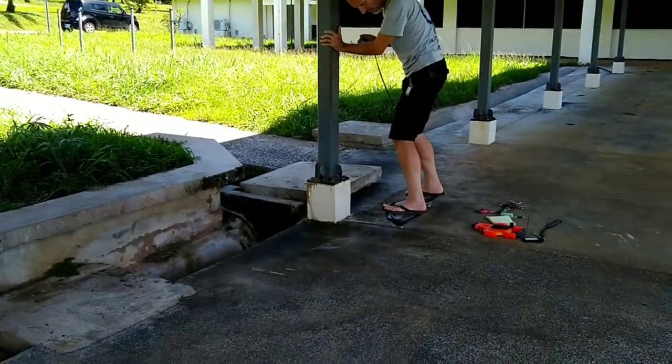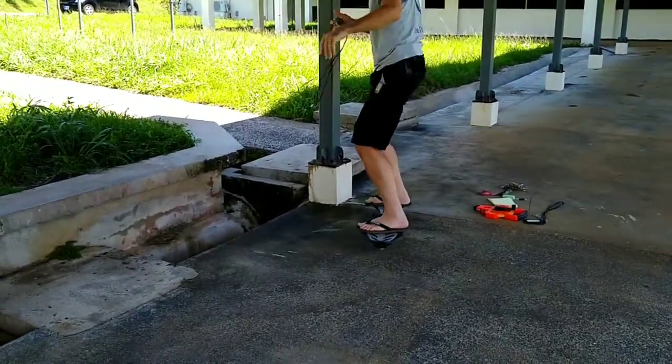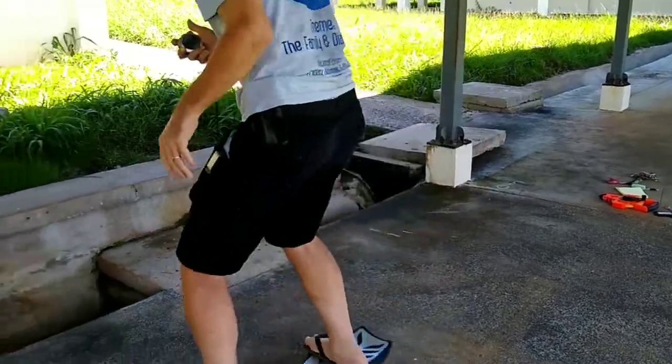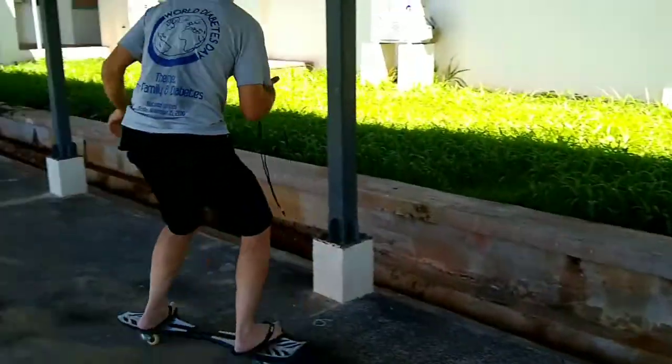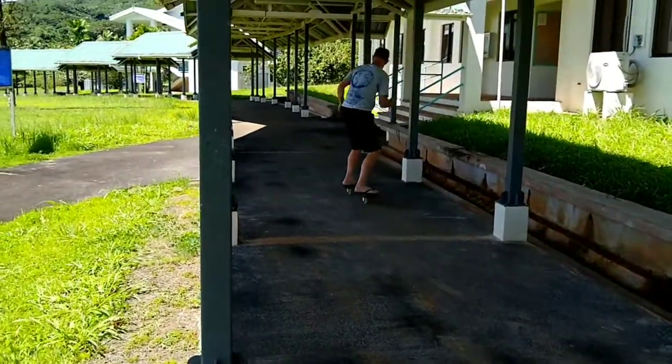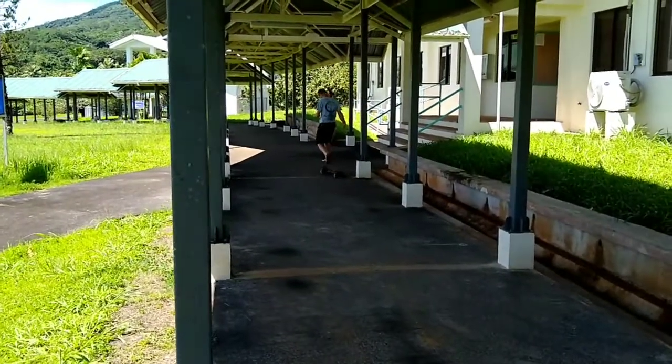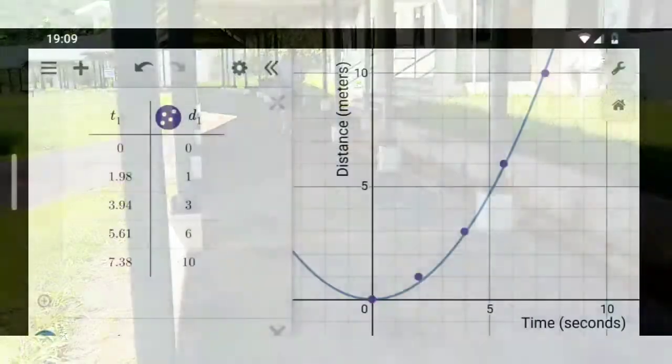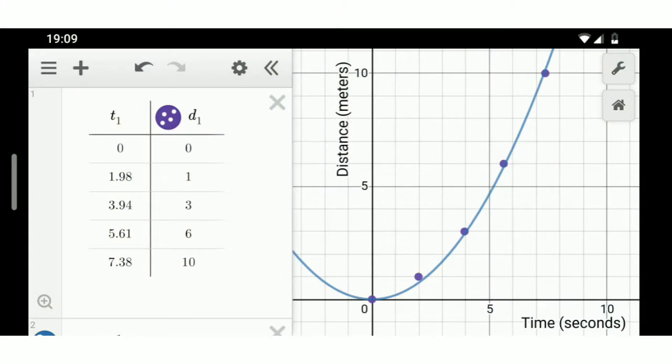On Monday we took a look at the mathematical shape on a graph one would get if one accelerates from rest. One gets on the graph an ever-increasing velocity, a shape called a parabola.